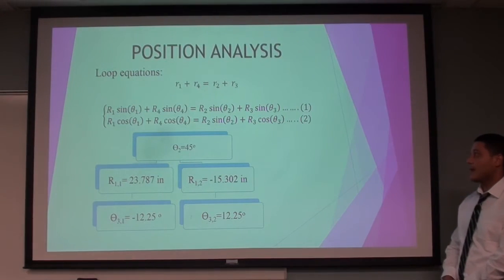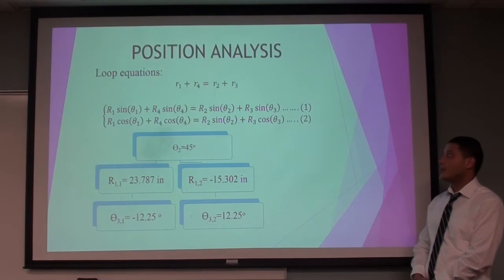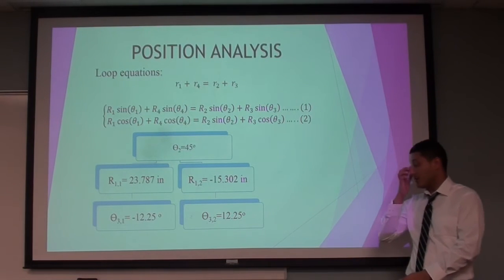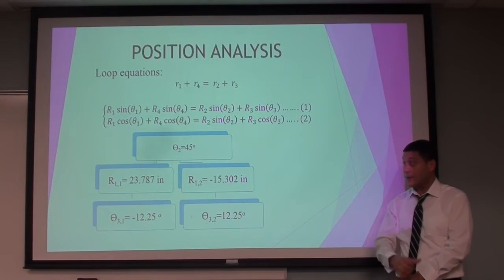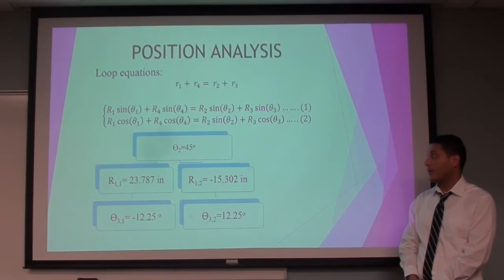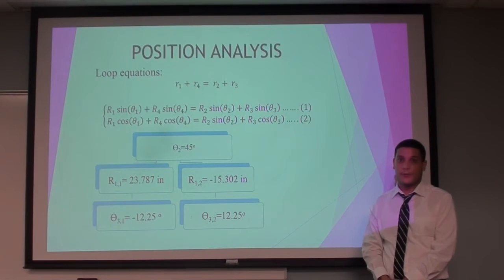For the position analysis, we used the loop equation. We got the scalar equation. After developing the scalar equations, we determined the loop closures. For R1, which is the slider, and the coupler link, which is theta3, knowing that theta2 was given to be 45 degrees.